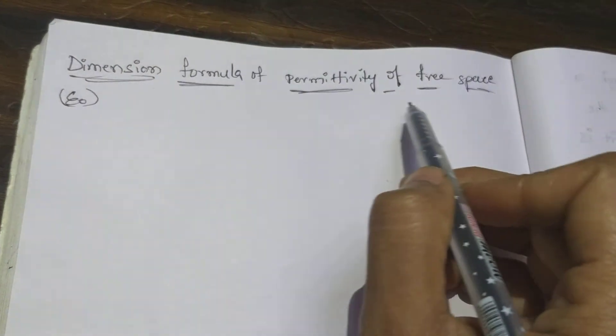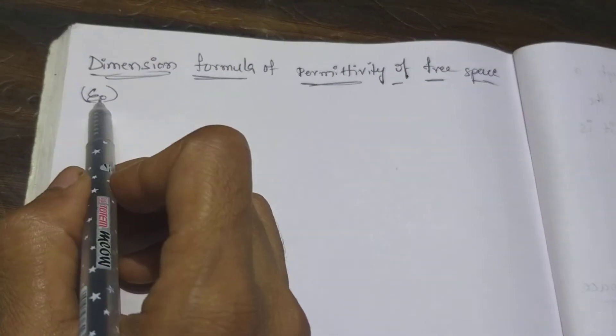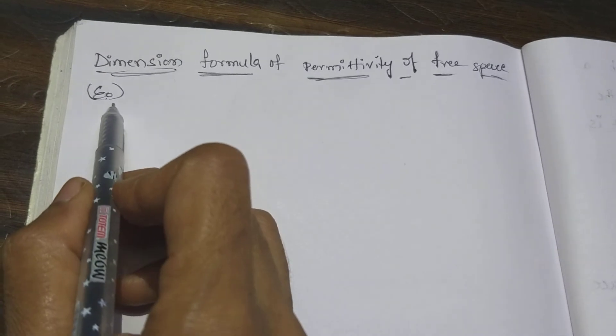Today I am going to explain dimensional formula of permittivity of free space. This is represented by epsilon naught.